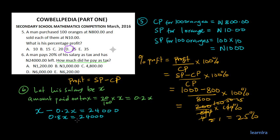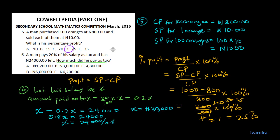Dividing both sides by 0.8, we get X equals 24,000 divided by 0.8, which equals 30,000. So X equals 30,000 naira. This represents his original salary — his real salary is 30,000 naira.